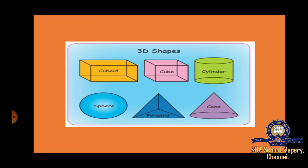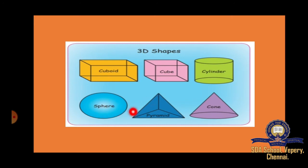Now we will see 3D shapes — three dimensional shapes. What are the 3D shapes? The first one is cuboid, cube, cylinder, sphere, pyramid, and cone.